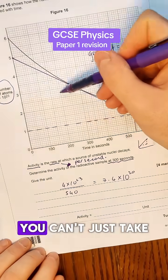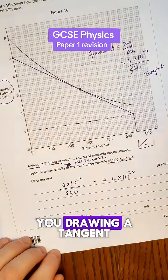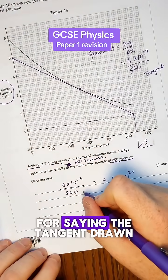For this question I do need to see evidence of a tangent. You can't just take two values. They need to see you drawing a tangent for any of these marks. So we've got a mark for saying the tangent drawn, mark for working out some sort of gradient and mark for final answer which I'm going to put in here.